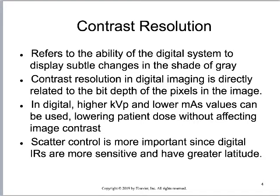Contrast resolution is related to the bit depth of those pixels — it has nothing to do with the spatial size of the pixels, but with how much gray any one pixel can store. We said 2 to the 8th gives 256 shades of gray. In digital, as we increase the kVp and lower the mAs, we can lower the patient dose without affecting image contrast. Compare my old Merrill's textbook to yours — the kVp values are different because mine was written for film and yours for digital.